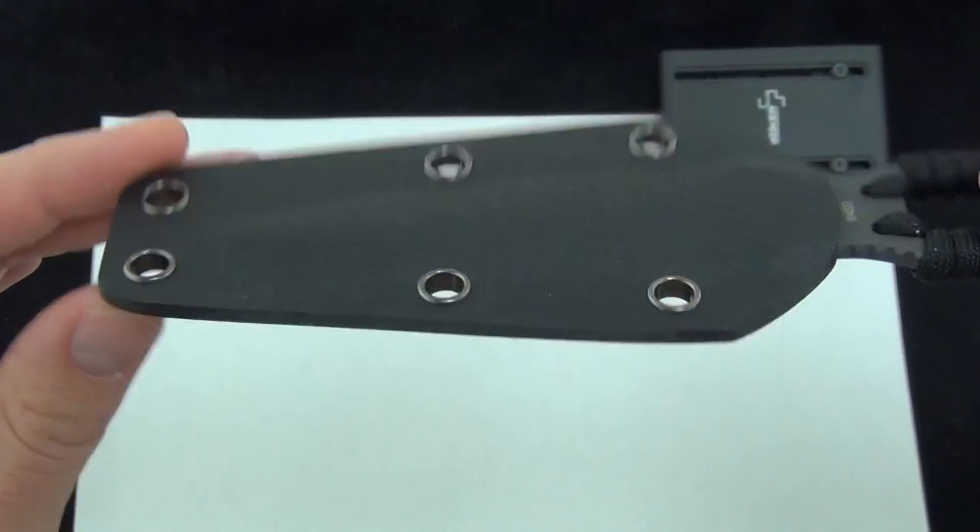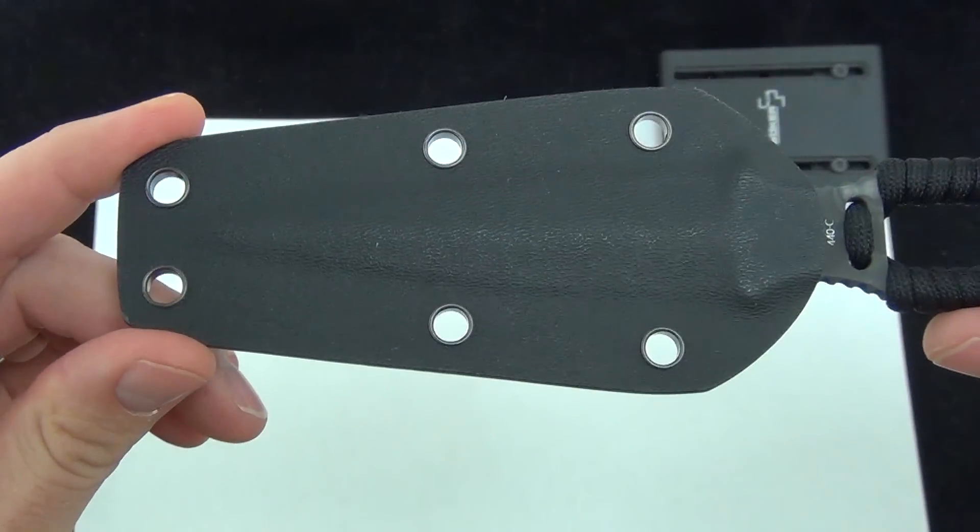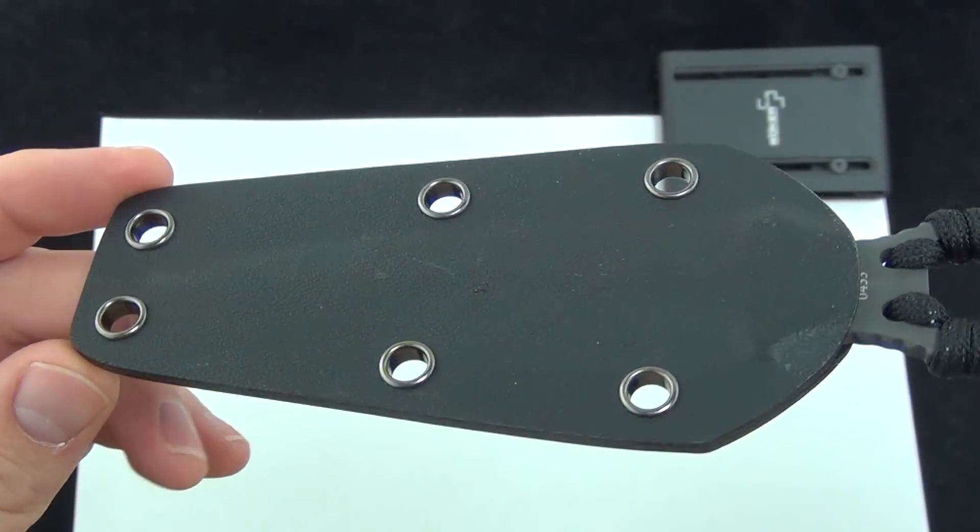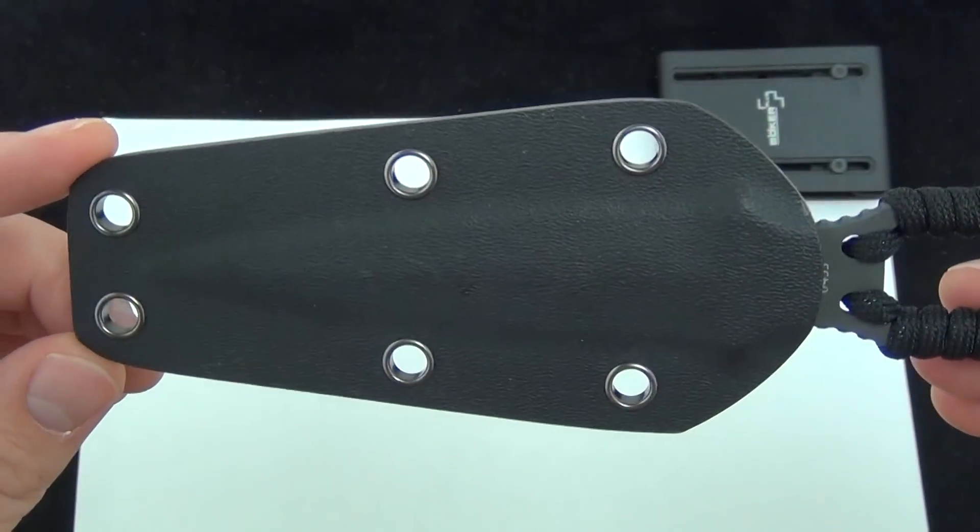Kydex sheath, pancake model, it's not folded over. And there is a good look at the six metal rivets and the blade, so you can strap it to pretty much anything.